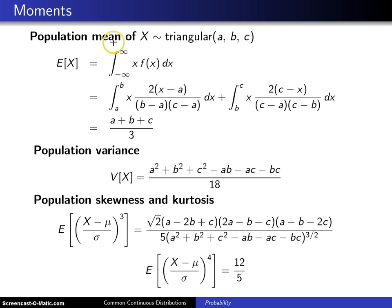Begin with the population mean. The expected value of X, E of X or mu, in general for a continuous random variable will be the integral from negative infinity to infinity of x times f of x. Because the triangular distribution is defined over two different pieces, namely from the minimum to the mode, that is from a to b, you have two pieces to put together.